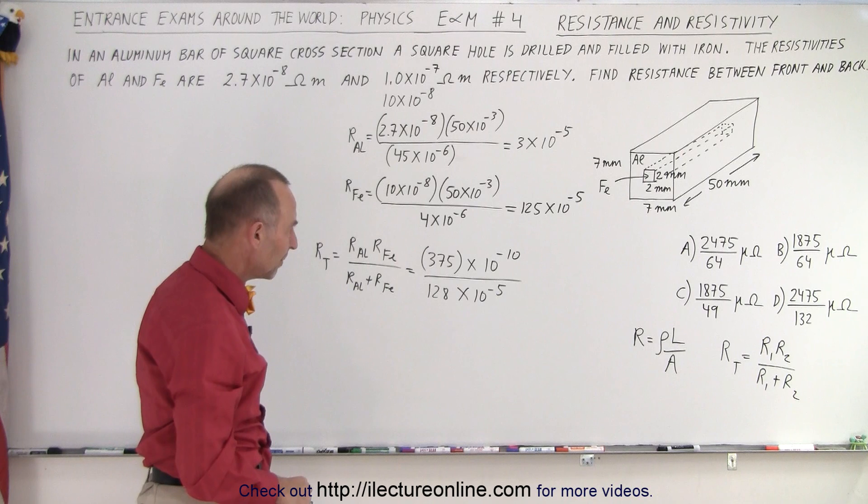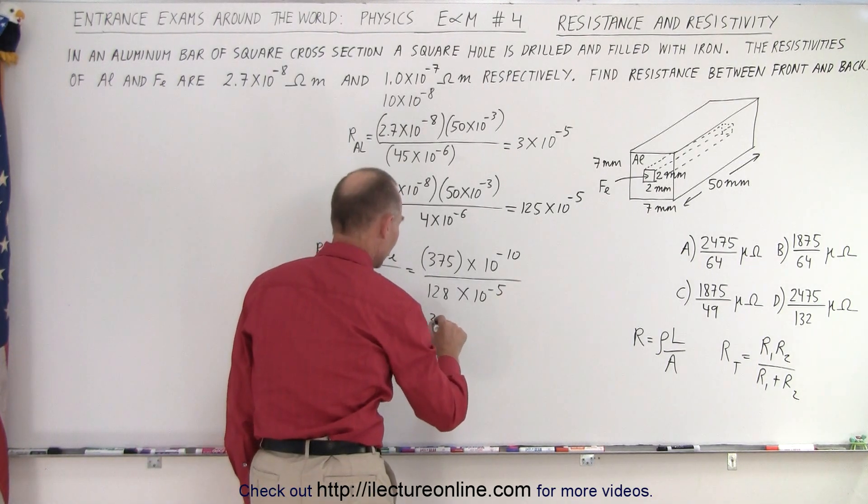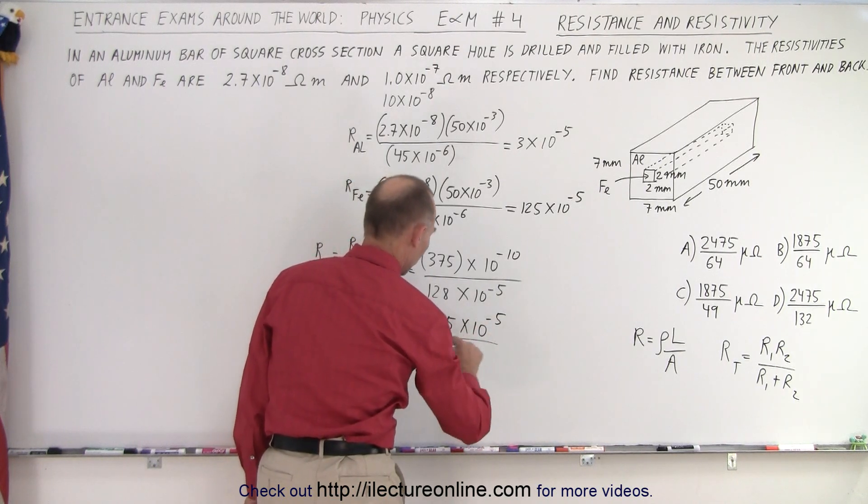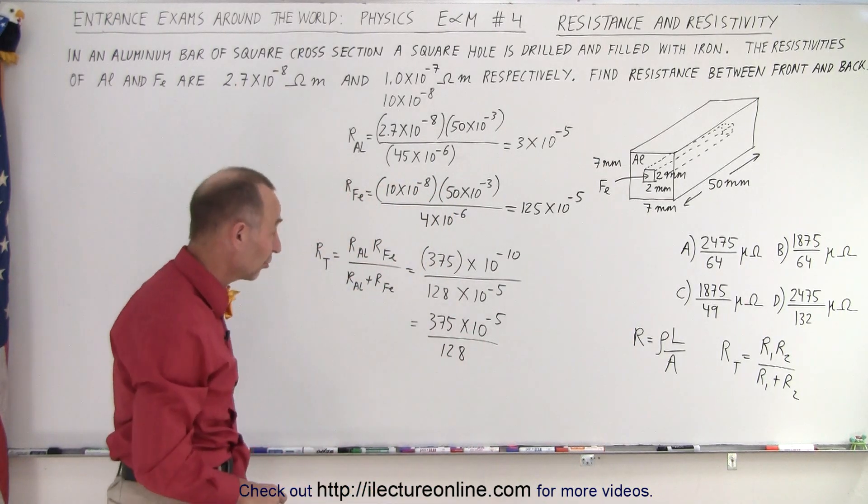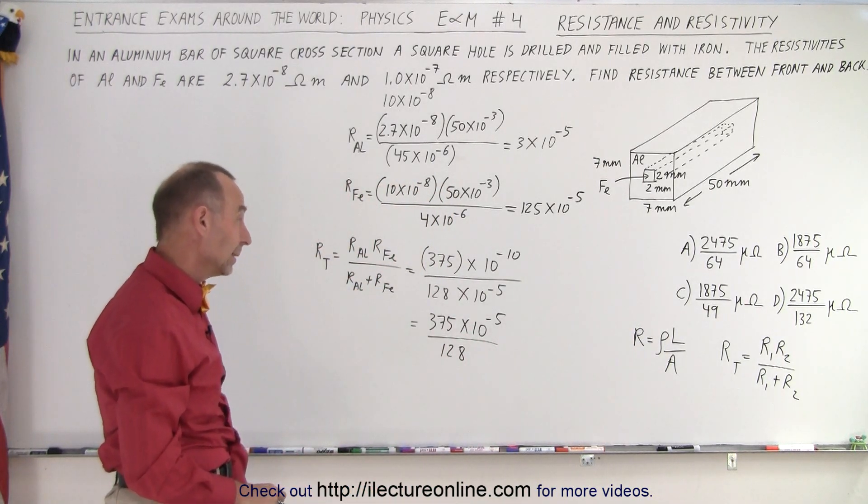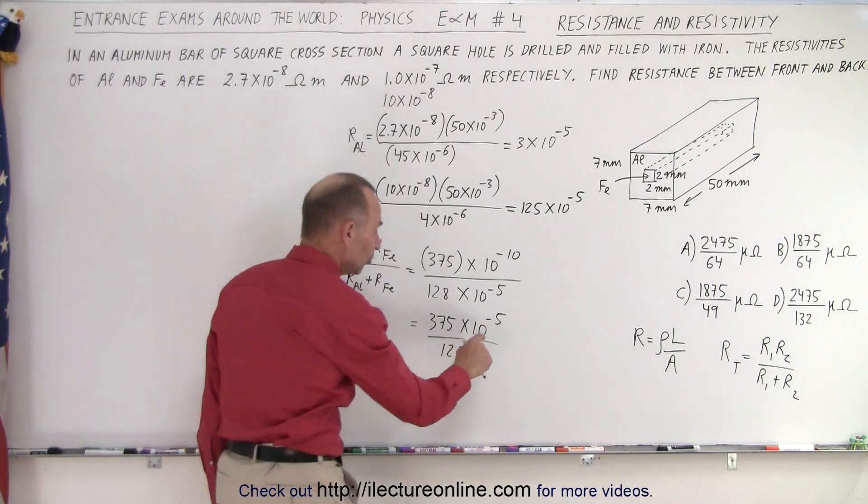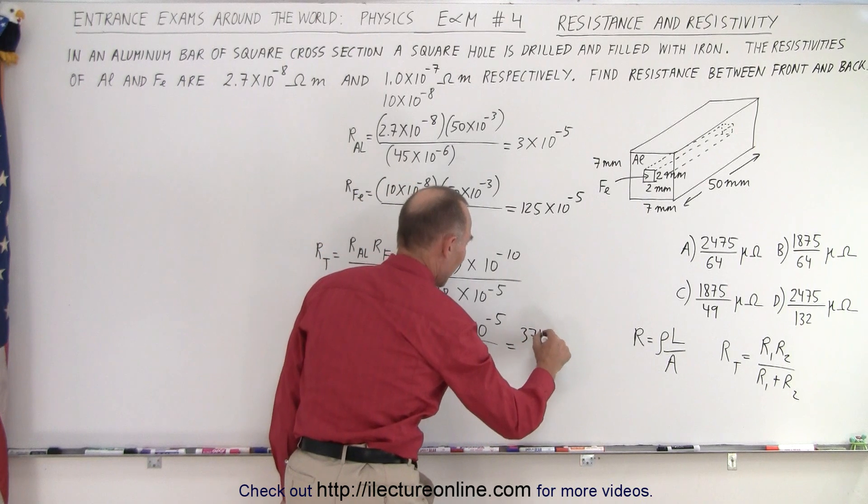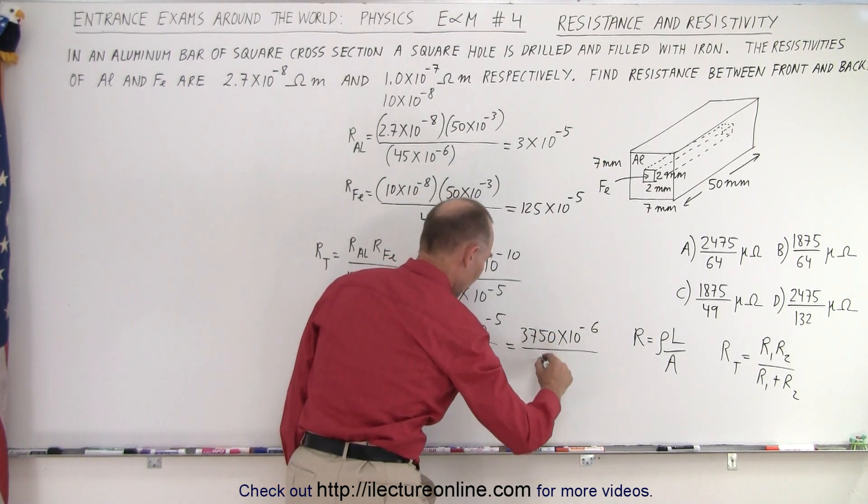10 to the minus 10 divided by 10 to the minus 5, so this would be equal to 375 times 10 to the minus 5 over 128. Now we take a look to see which of those answers is correct. Maybe what I can do is change this to 10 to the minus 6, so this can be written as 3750 times 10 to the minus 6 divided by 128.